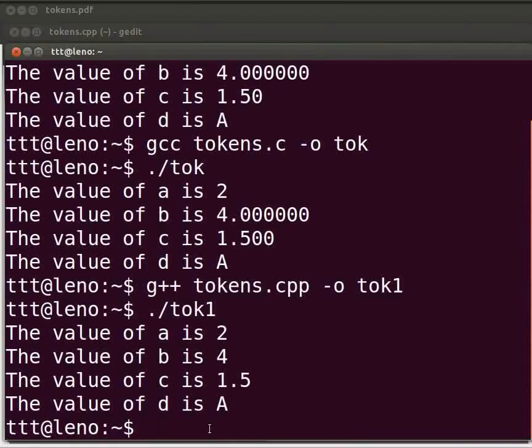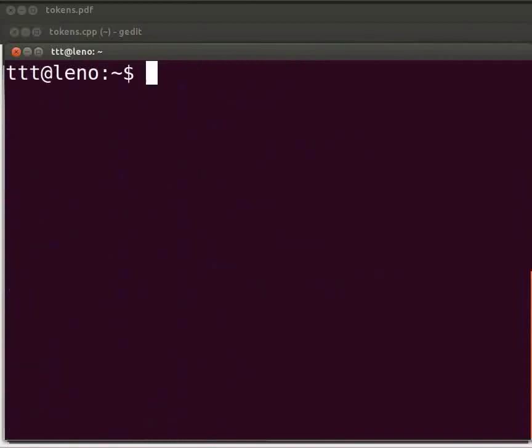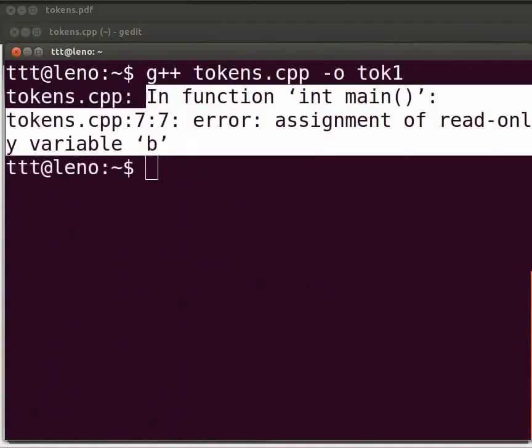Let me clear the prompt. Now compile as before. We see an error at line number 7 in our tokens.cpp file. Assignment of read only variable b.